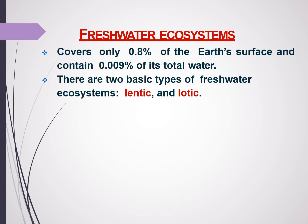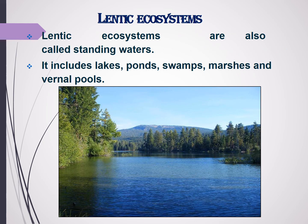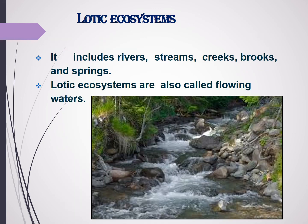Next we will move on to the freshwater ecosystem. It covers only 0.8% of the earth's surface and contains 0.009% of its total water. The freshwater ecosystem is of two types: lentic and lotic. The lentic ecosystem includes standing waters like ponds, swamps, marshes, and pools. The lotic ecosystem includes rivers and streams — that is, flowing water ecosystems.